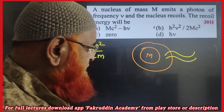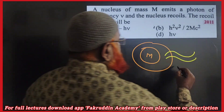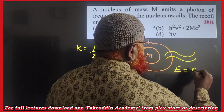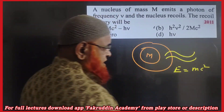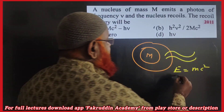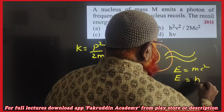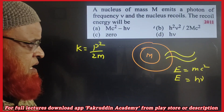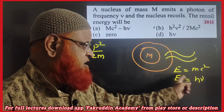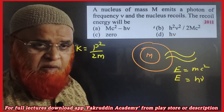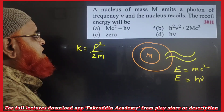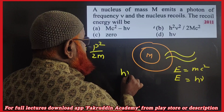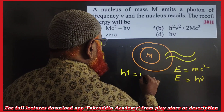Einstein said that energy is equal to mc², and Planck said that energy is equal to hν. Setting them equal: hν = mc².